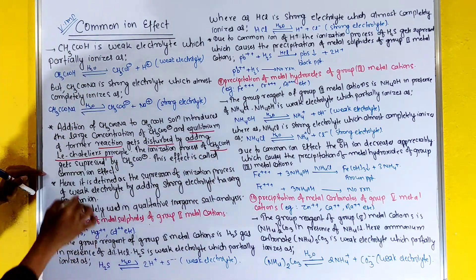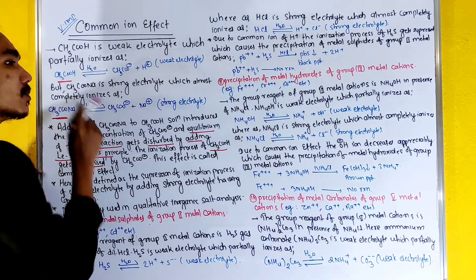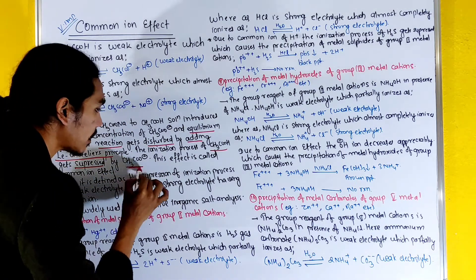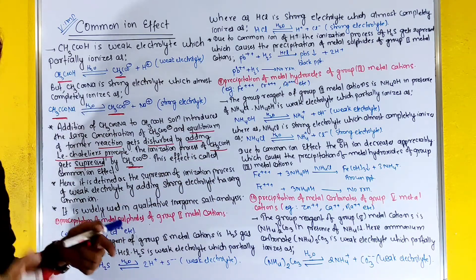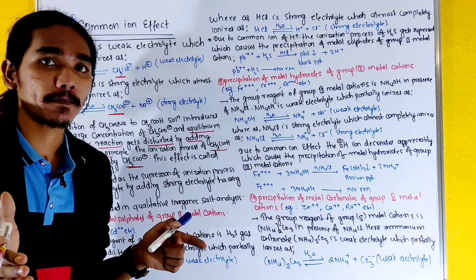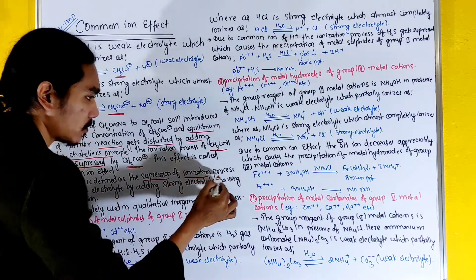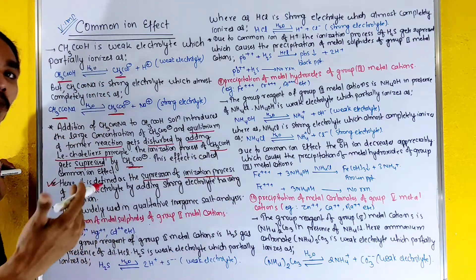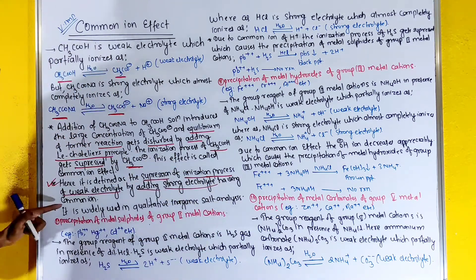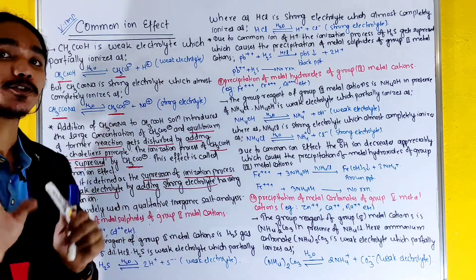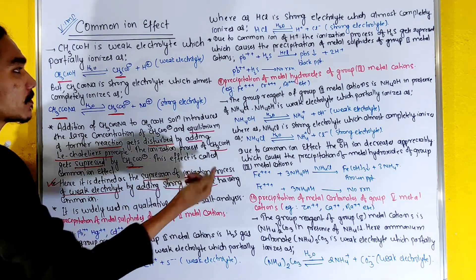The ionization process of CH₃COOH gets suppressed when we add the strong electrolyte. This electrolyte will suppress the ionization. By adding CH₃COONa, this effect is called the common ion effect. This process is called the common ion effect and is defined as the suppression of the ionization process of a weak electrolyte by adding a strong electrolyte having a common ion.